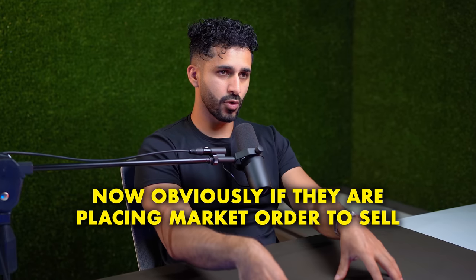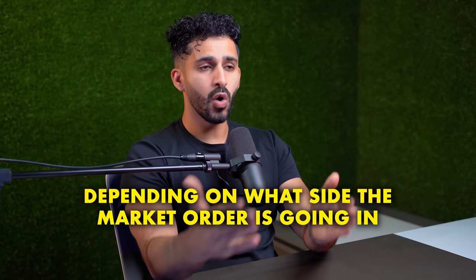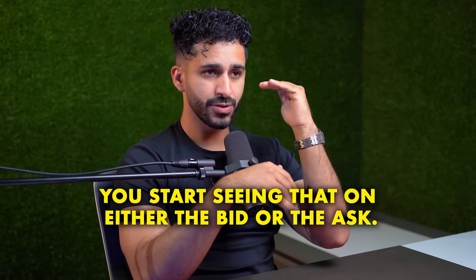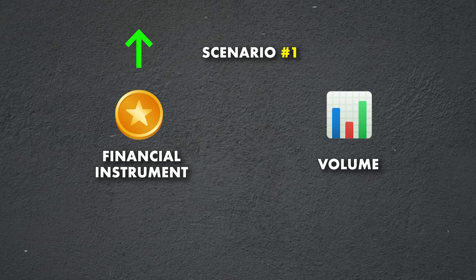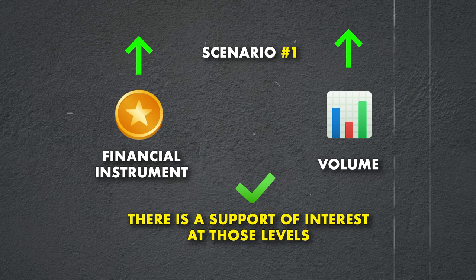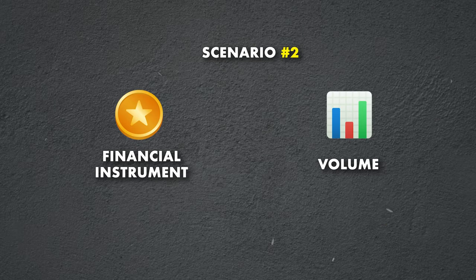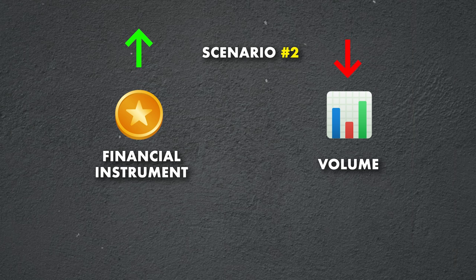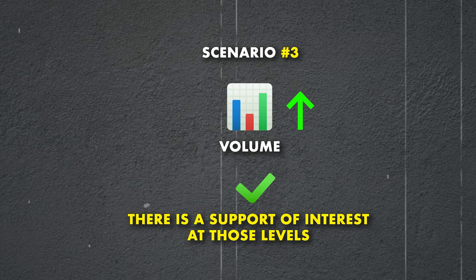If they're placing a market order to sell, they're being aggressive on the buy or sell side depending on what side the market order is going in, or they're placing a limit order, which you start seeing on either the bid or the ask. So if a financial instrument is going higher and higher and volume is also going higher and higher, that means there is a support of interest at those buying levels. But if price is going higher and volume is staying flat or going lower, that indicates there's no interest at those levels. If volume keeps going higher, that showcases interest at those particular levels.